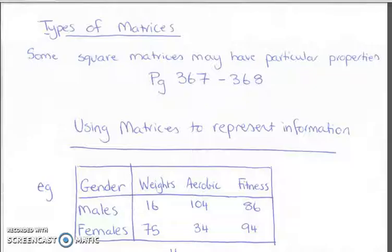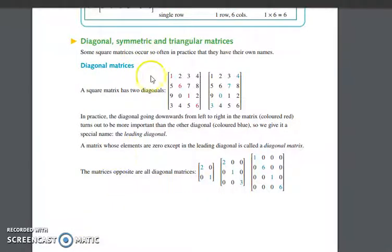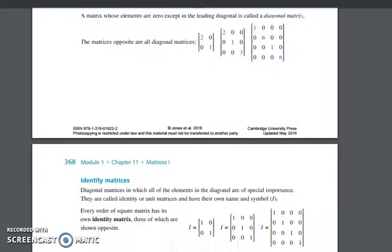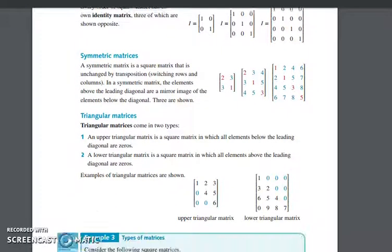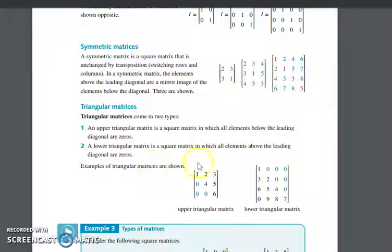Types of matrices. Page 367 to 368, some square matrices have particular properties. There's diagonal matrices. If we keep going down, we have identity matrices, symmetric matrices, triangular matrices. Knowing what these are is very, very important.